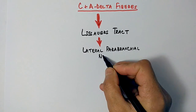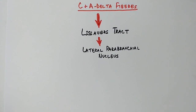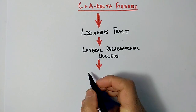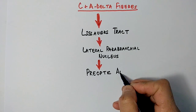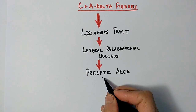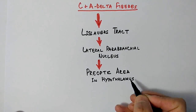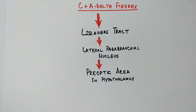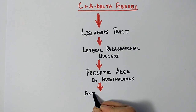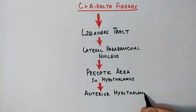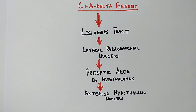This tract transmits the signal to the brain through the lateral parabrachial nucleus. The lateral parabrachial nucleus then transmits the signal to the pre-optic area in the hypothalamus, which is the thermoregulatory area.